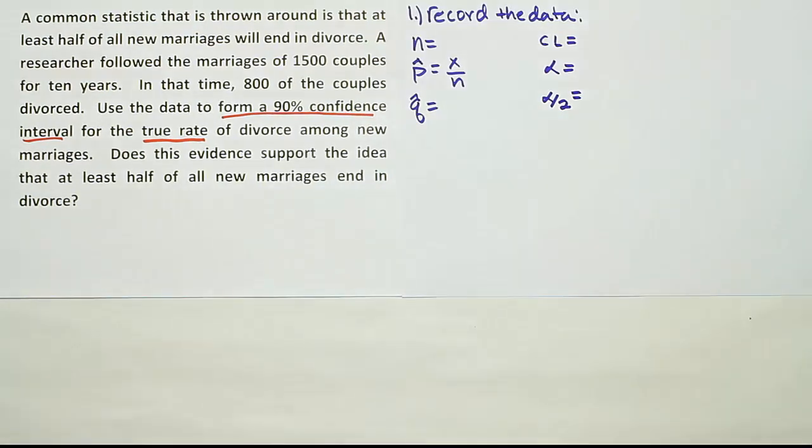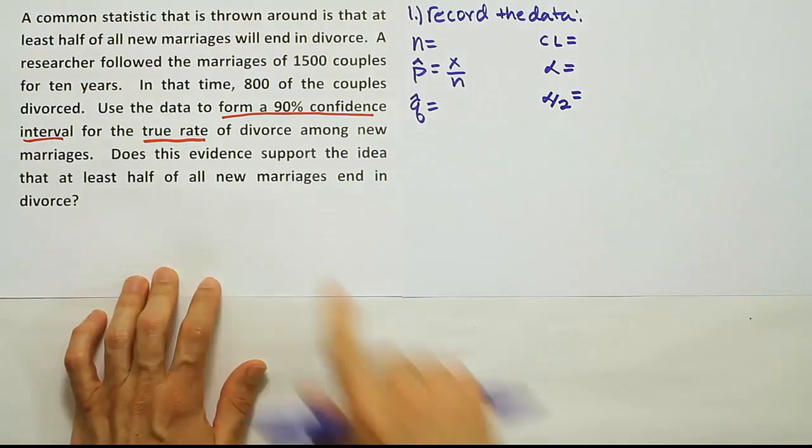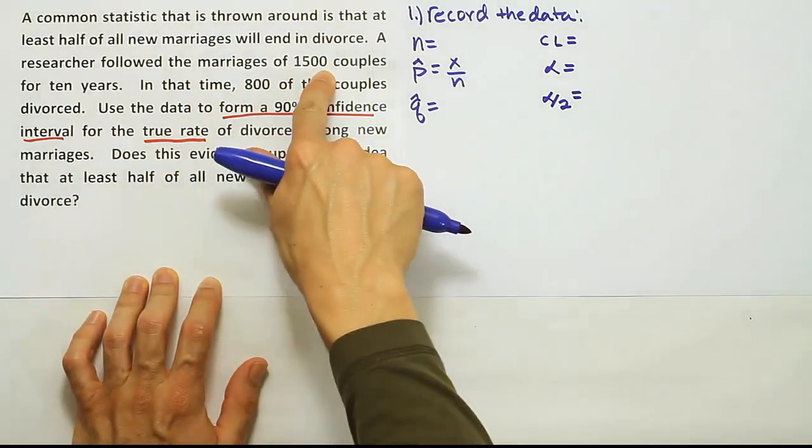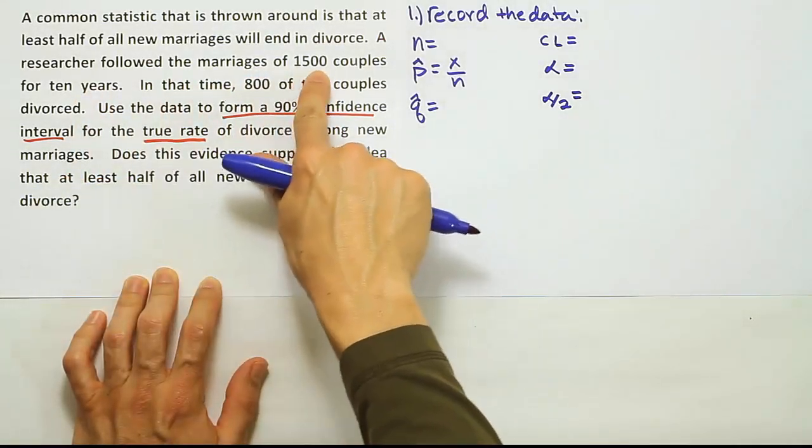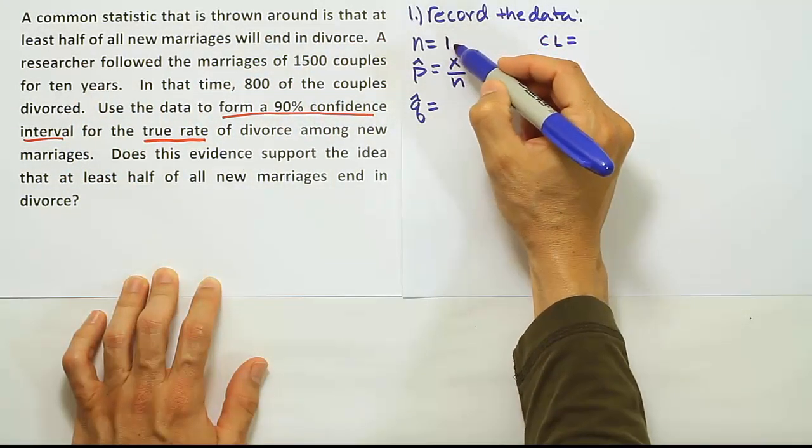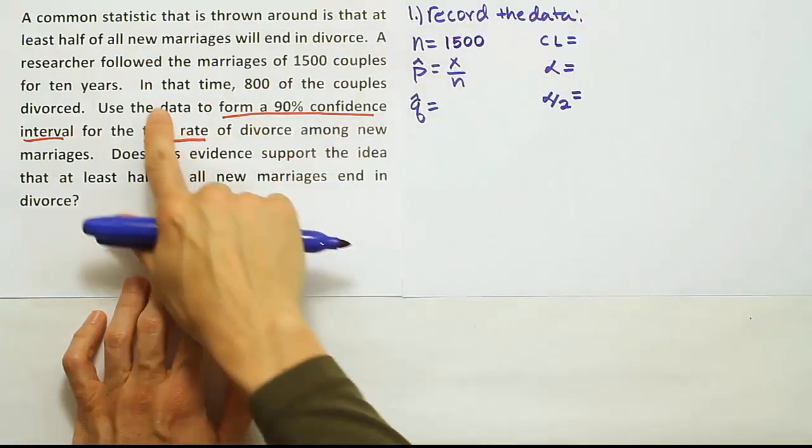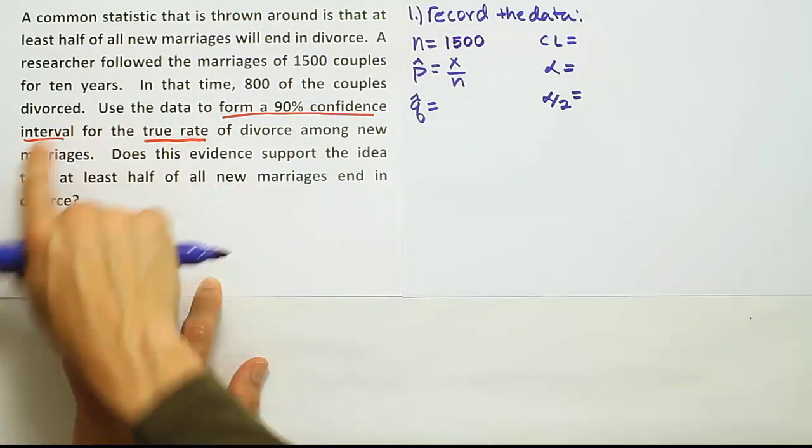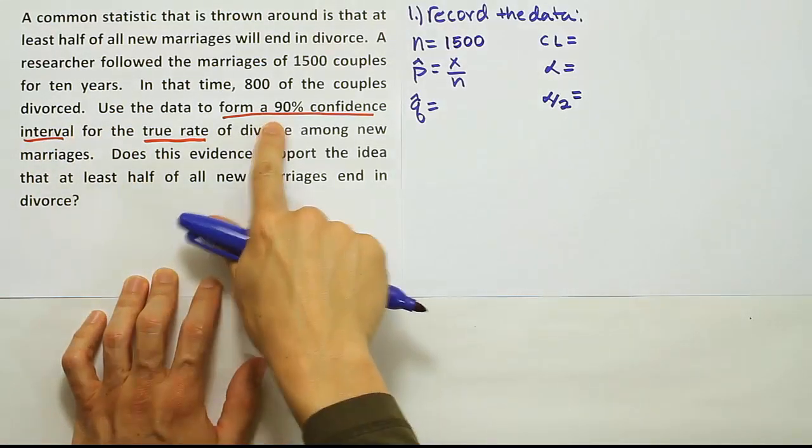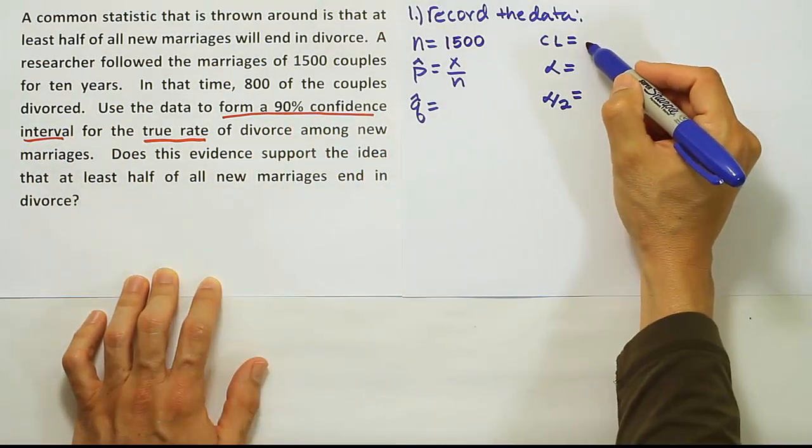Let's list the N here for this problem. It says that a researcher followed the marriages of 1,500 couples for 10 years. So the N is 1,500. There were 1,500 couples followed. It says in that time, 800 of the couples divorced. And I talk about a 90% confidence level. Let's put the confidence level in.